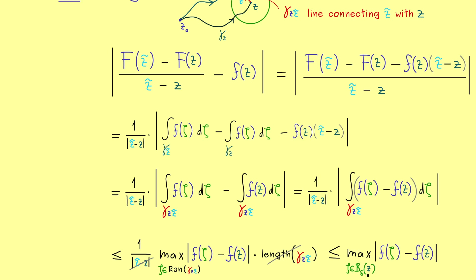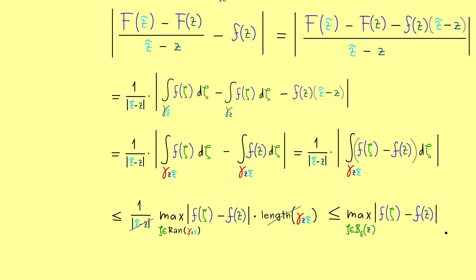In other words, I can say, when we send epsilon to 0, this goes to 0. However, with this we now also see, if we send z tilde to z, then this goes also to 0. In other words, the derivative of capital F is just lowercase f.